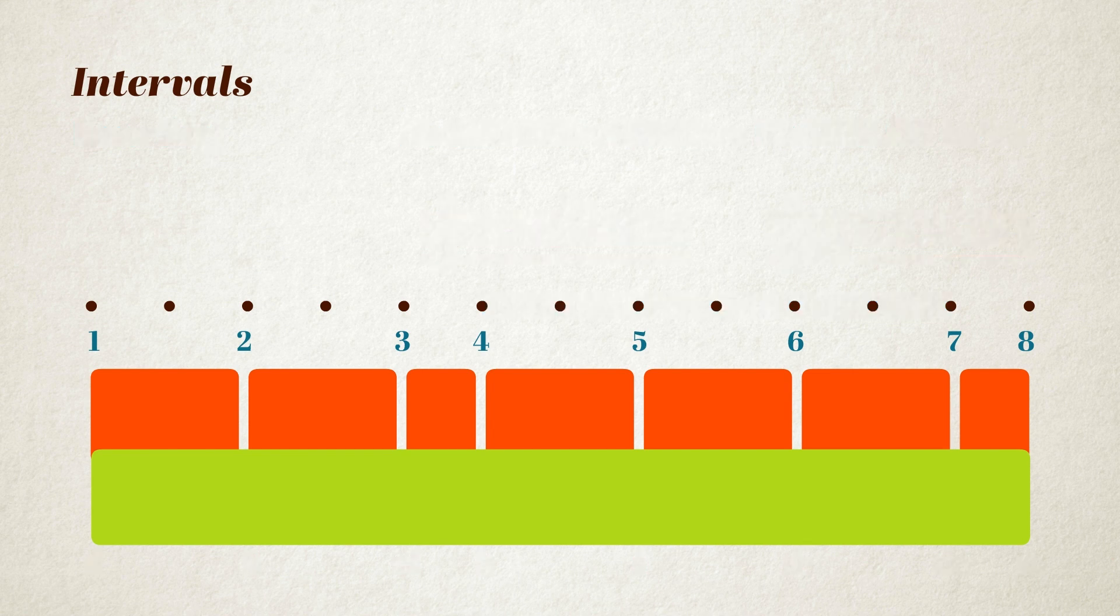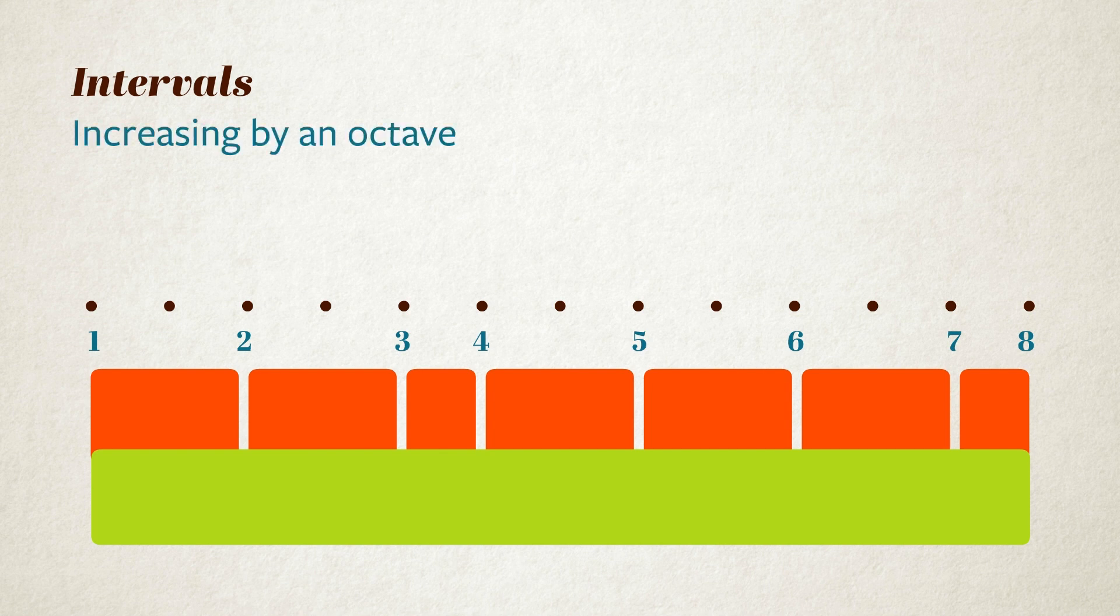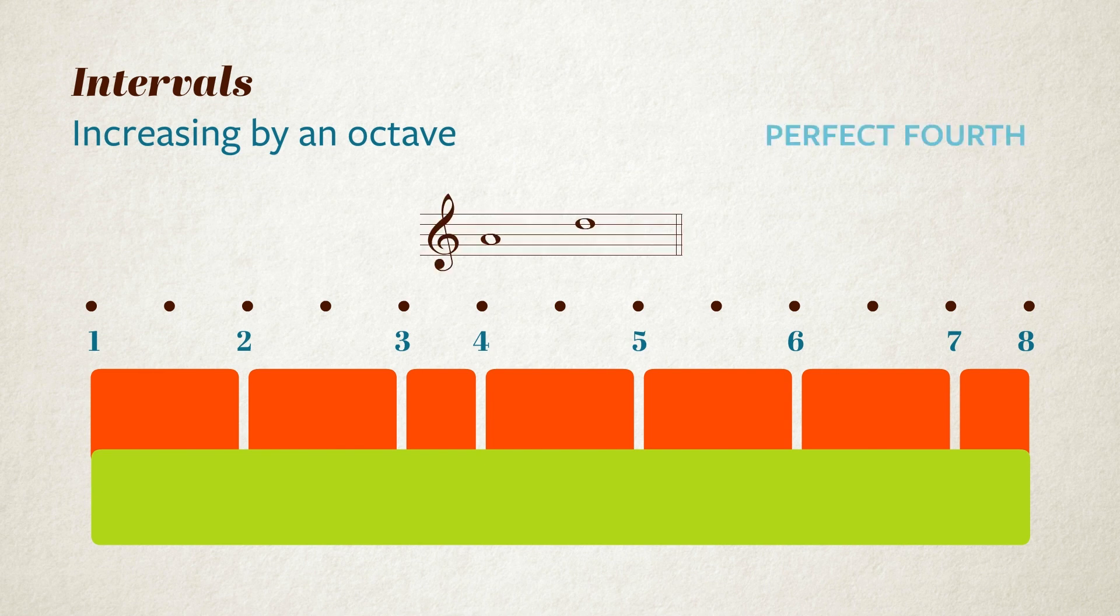To recap then, octaves, fourths and fifths are perfect. If they're increased, that is to say sharpened by a semitone, they're augmented. And if they're decreased or flattened by a semitone, then they're diminished. Otherwise, we talk about major and minor intervals. Seconds, thirds, sixths and sevenths can all be major or minor. And by the way, if you want to increase any interval by an octave, just add a seven to it. For instance, a perfect fourth plus an octave is a perfect eleventh.